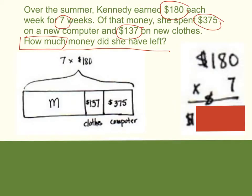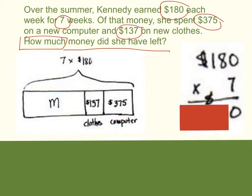Let's first solve our multiplication problem to see how much money she earned for those seven weeks. We'll use the standard algorithm. First, you start out with your ones column: seven times zero ones would give me a product of zero. Next, we move to our tens: seven times eight tens would give me a product of 56.